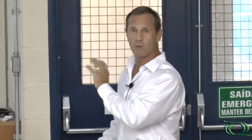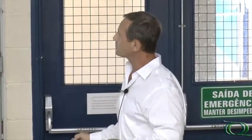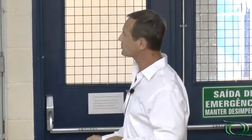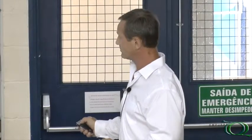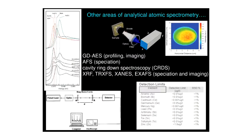In focusing on those four instrumental techniques, we have to disregard a number of other very important ones due to lack of time. One of these is glow discharge, either in a mass spectrometry or atomic emission mode, which is widely used for depth profiling of materials or two-dimensional imaging, where you can get patterns showing the intensities of various elements in a multi-element fashion as a function of the 2D geometry. Also not covered is atomic fluorescence, which is widely used for speciation analysis, with detection limits for a number of elements in the parts per trillion range.